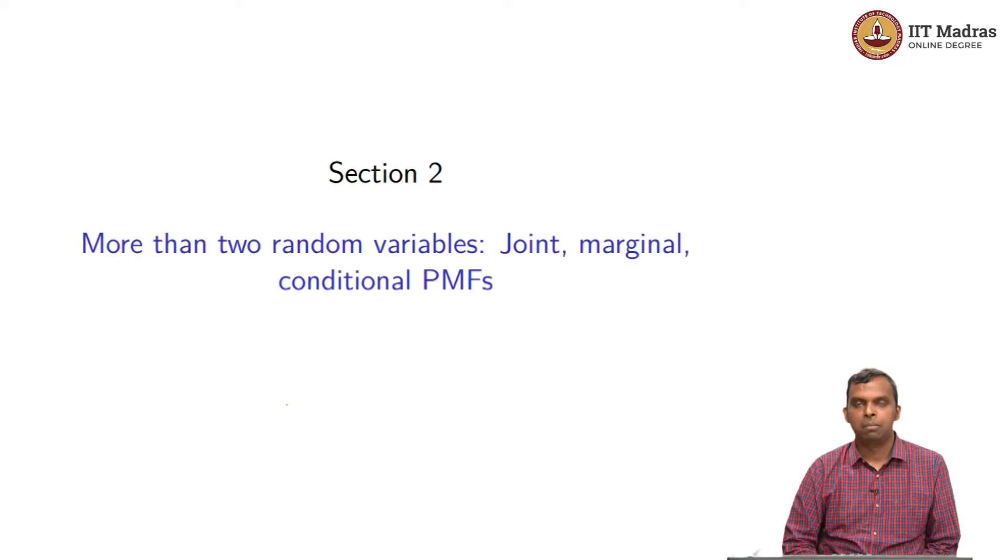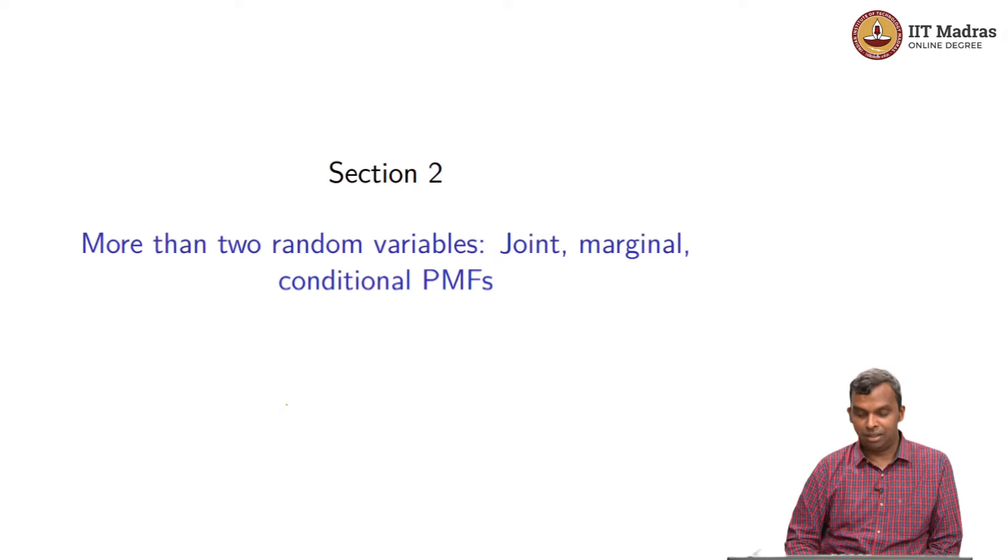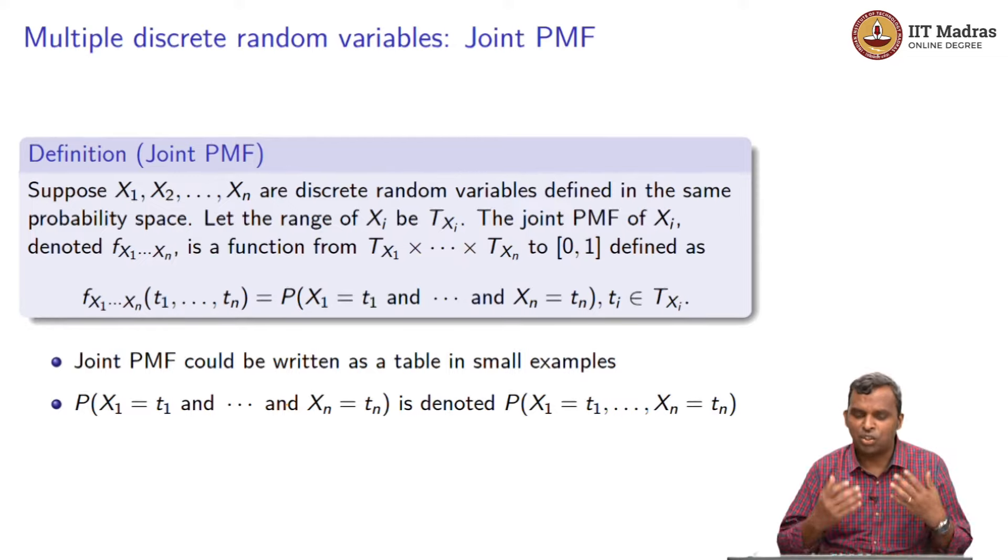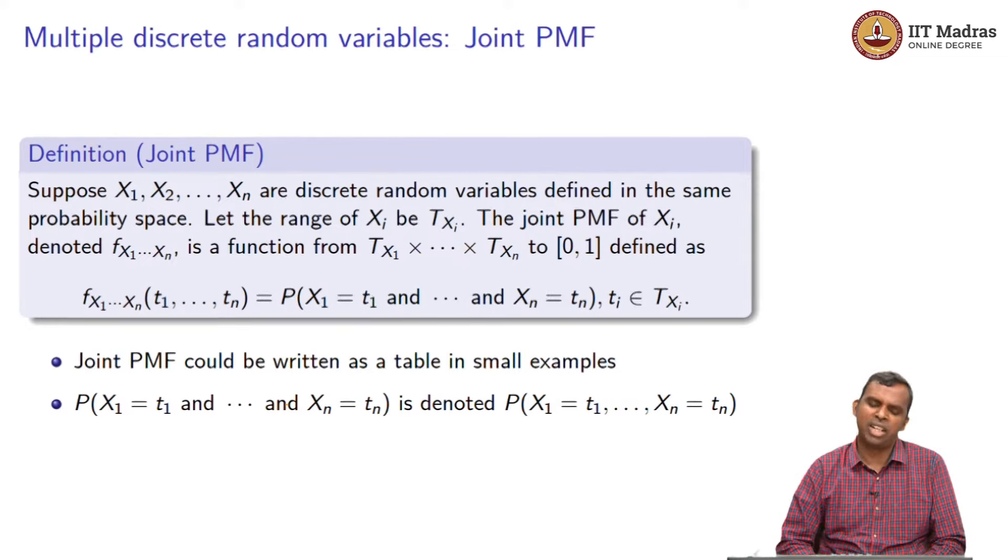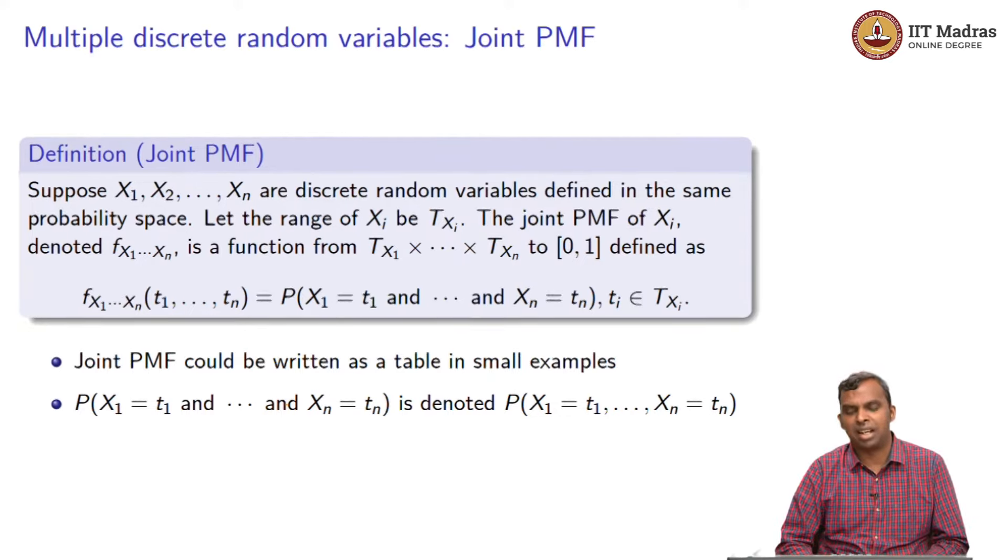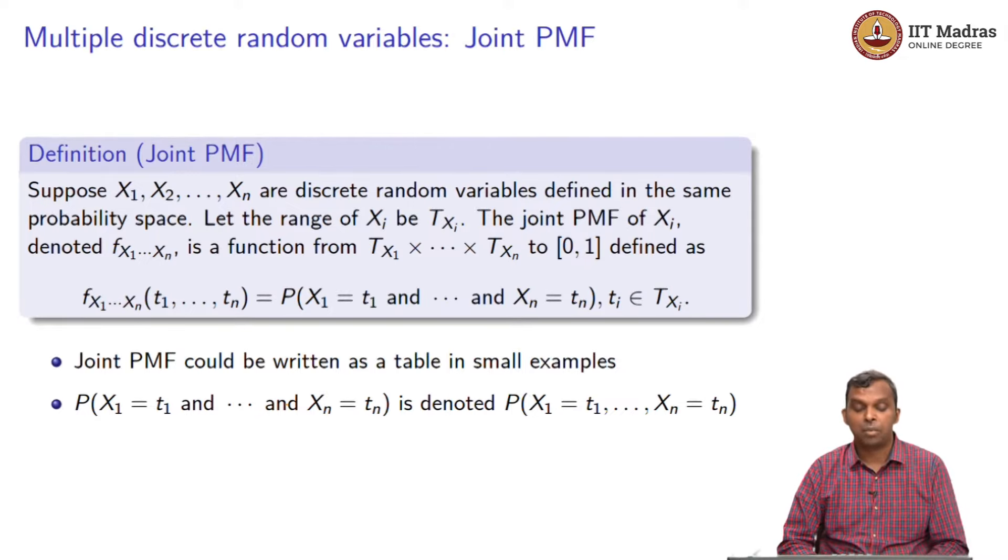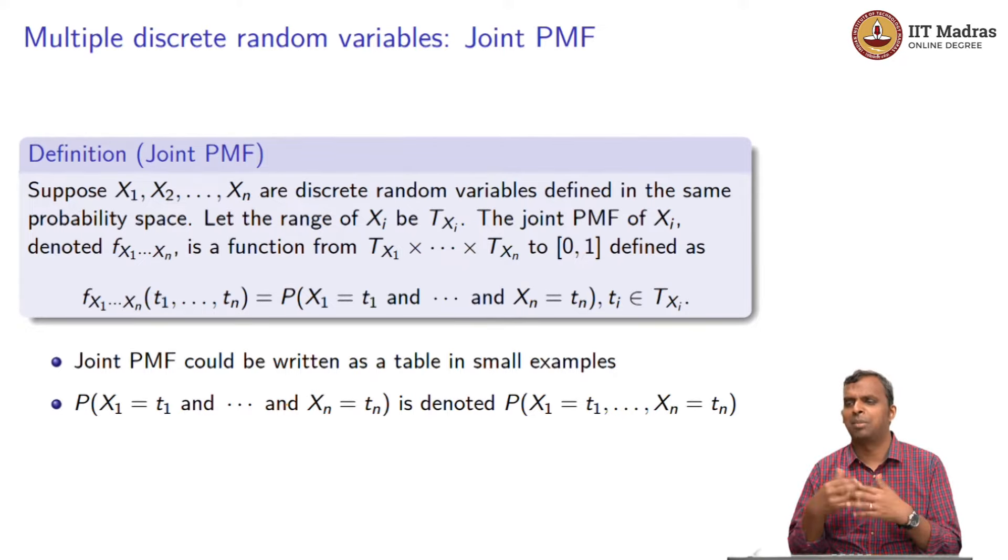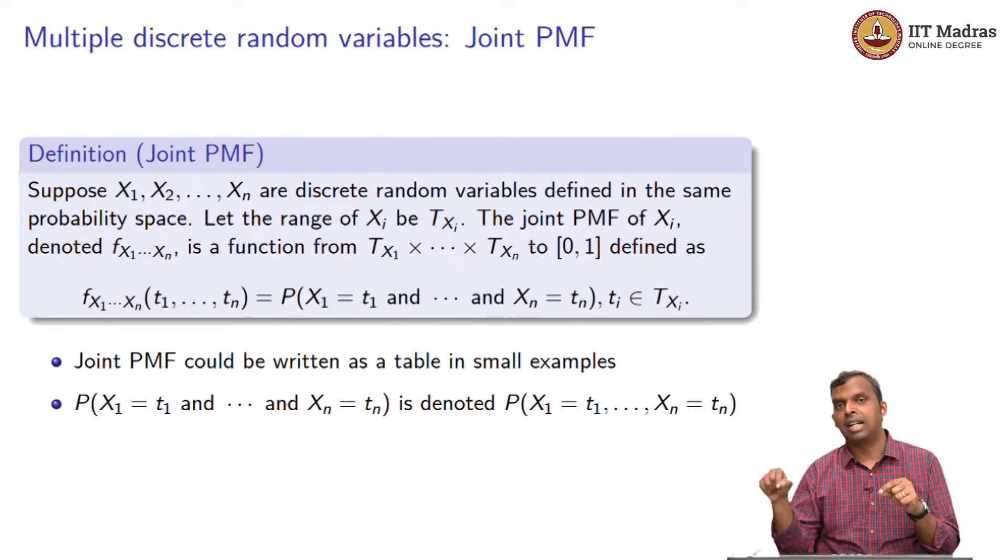How do you think of all these PMFs? Still in the discrete world joint PMF, marginal PMF, conditional PMF, how do you do all that is the beginning of this lecture. The joint PMF itself for multiple discrete random variables is very easy to define. Suppose you have n discrete random variables X1, X2 to Xn that are all defined in the same probability space. Every random variable will have its own range, I will call that T_Xi.